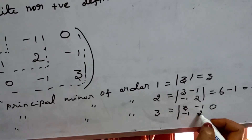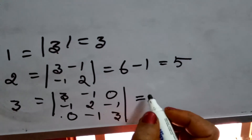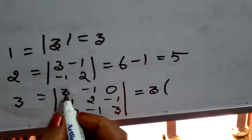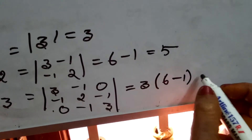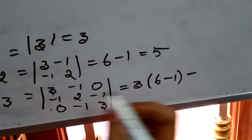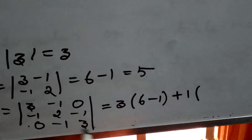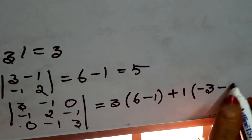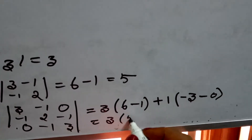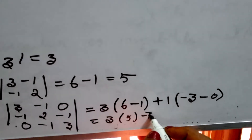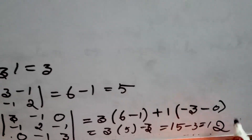The leading principal minor of order 3 = det(A) = det([[3, -1, 0], [-1, 2, -1], [0, -1, 3]]). Expanding along the first row: 3×(2×3 - (-1)×(-1)) - (-1)×((-1)×3 - (-1)×0) + 0. This gives 3×(6-1) - (-1)×(-3) = 3×5 - 3 = 15 - 3 = 12. All three values are greater than 0.